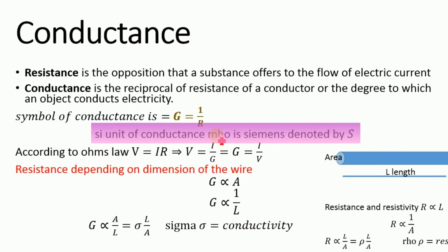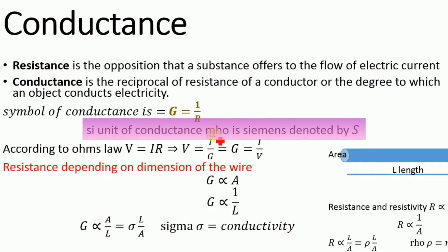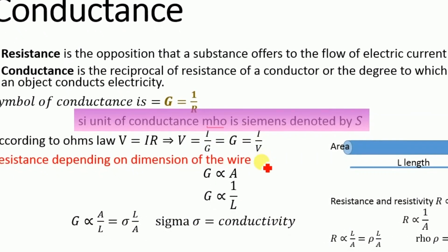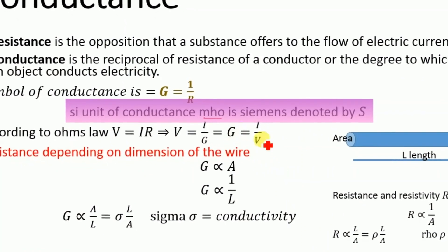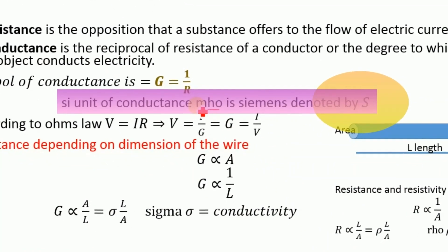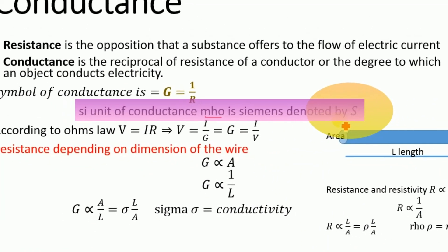The SI unit of conductance is mho, which is just the opposite of the unit of resistance, ohm, and is denoted by S.